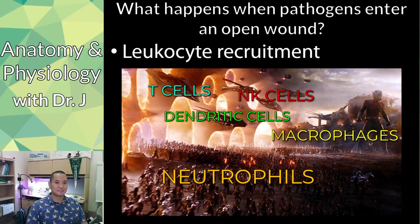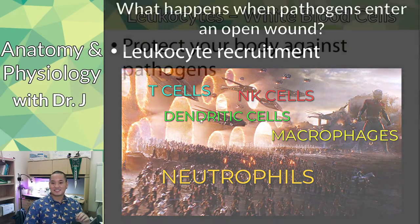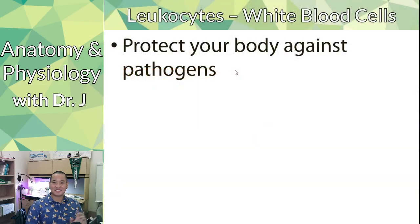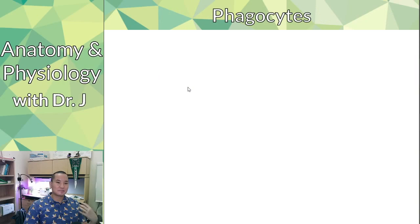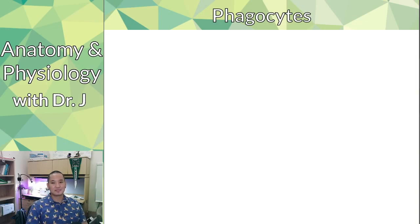It tries to recruit everything to combat the infection and get rid of it. White blood cells — these are immune defenses. These protect your bodies against pathogens. Now we're going to talk about these leukocytes in more detail. We talked about them very surface level at the beginning of the semester, but now we're going to get more into the different types and what they do.